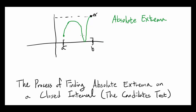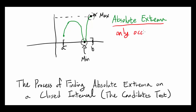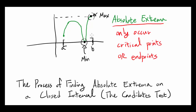Now if someone asks you to find absolute extrema of this function — what is going to be the absolute maximum? This point is going to be the absolute maximum because that's the highest point the function values reach. And the absolute minimum is going to be this point, the lowest point the function can reach. Absolute extrema can only occur at a critical point or at the endpoint.